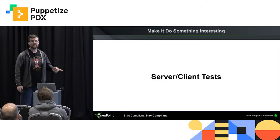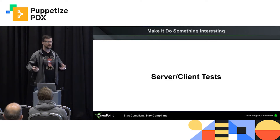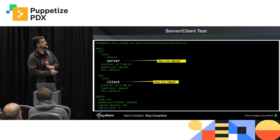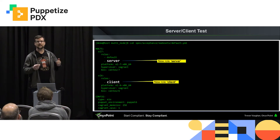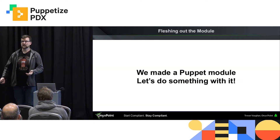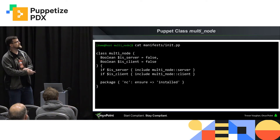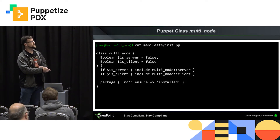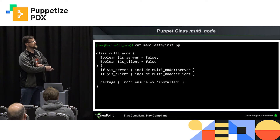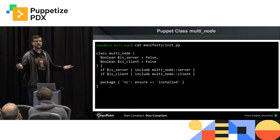Now let's do something interesting — an actual server-client test. We want to check what happens between server and client successfully. In the node set, we're going to define a role called 'server' and a role called 'client,' which lets us differentiate between the two easily. We made a Puppet module, so let's actually do some Puppet. We have our multi-node class: if is_server, include multi-node::server; if is_client, include multi-node::client. And make sure both sides have the netcat package installed — netcat being the tool we're going to use to see if traffic can communicate between the two.